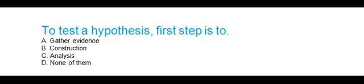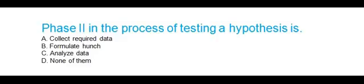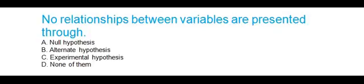To test a hypothesis, the first step is: gather evidence, construction, analysis, or none of them. The correct answer is gather evidence. Phase two in the process of testing a hypothesis is: collect required data, formulate the correct answer, analyze data, or none of them. The correct answer is collect required data. No relationship between variables is presented through: null hypothesis, alternate hypothesis, experimental hypothesis, or none of them. The correct answer is null hypothesis.